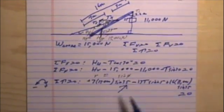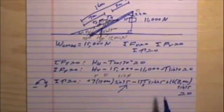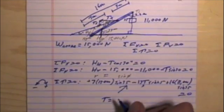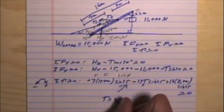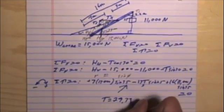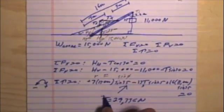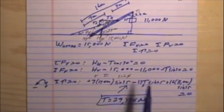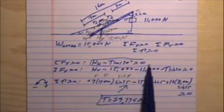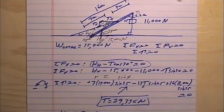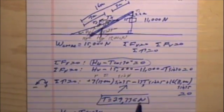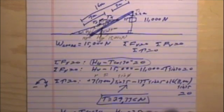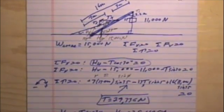Looking at the torque equation, the only unknown in there is the tension T. Solving for it — some numerical work and algebra — gives T approximately equal to 29,336 newtons, which is the tension in the cable. The next part of the question asks for the horizontal hinge force, retrieved from the X-force equation. Rearranging: H sub H equals T times cosine of 30. Substituting 29,336 times cosine of 30 gives a horizontal hinge force of approximately 25,405 newtons.